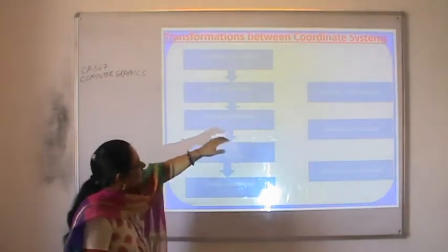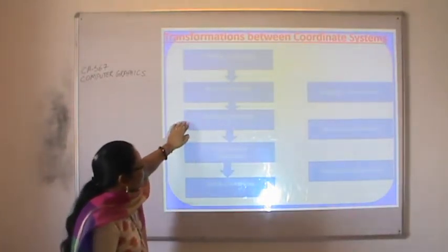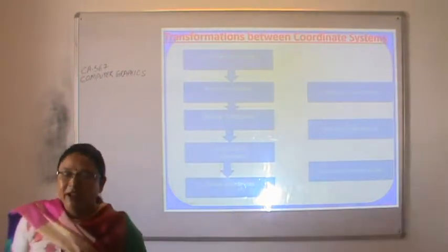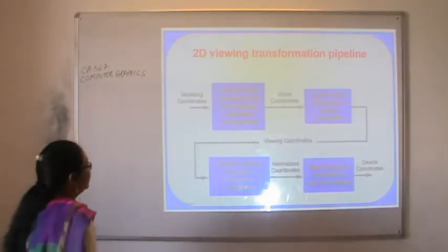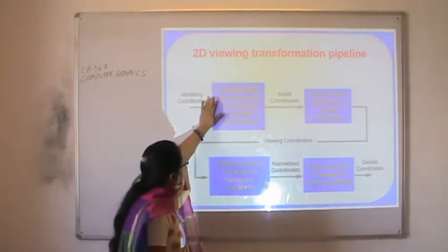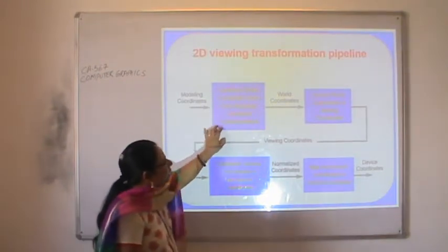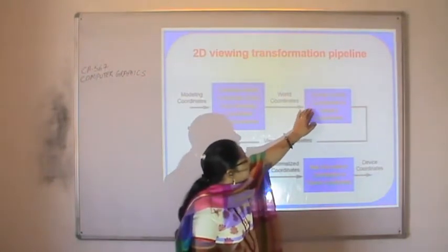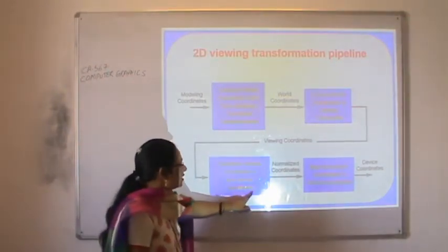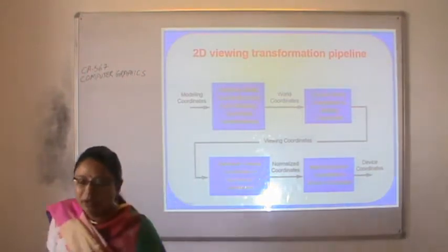First we get the modeling coordinates. Then we apply the modeling transformation and get the world coordinates. After applying the viewing transformation, we get the viewing coordinates. On applying projection transformation on the viewing coordinates, we get the virtual device coordinates. Finally, we can map the object to the device coordinates. The viewing transformation pipeline shows the same steps: modeling coordinates → world coordinates (via modeling transformation) → viewing coordinates → normalized coordinates → device coordinates.